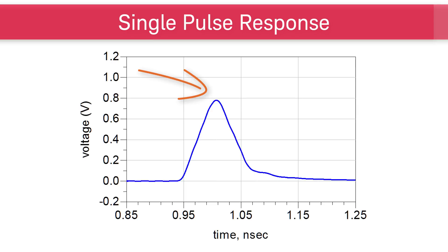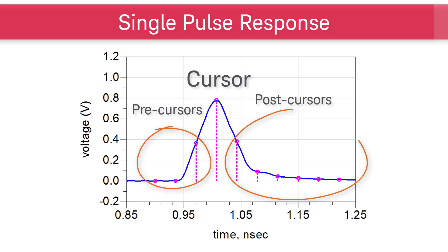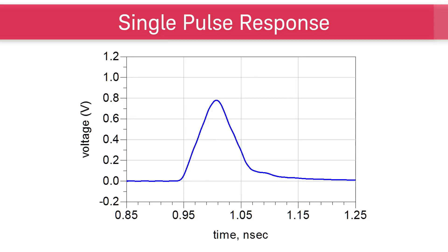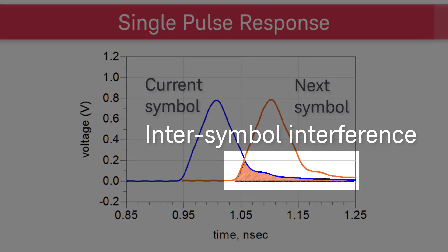If we start with the maximum of the single pulse response and name it the cursor, we can create a cursor diagram by marking the single pulse response in terms of unit intervals. The cursor diagram tells us how many precursors and postcursors the pulse response is spreading across. We will see later that pre- and postcursors are useful information for equalization. The amount of spreading is also a good representation of inter-symbol interference. Inter-symbol interference happens when current pulse leaks into adjacent pulses.